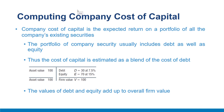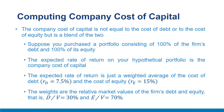The 7.5% cost of debt is the opportunity cost of capital for investors who hold the firm's debt; the 15% cost of equity is the opportunity cost for investors who hold the firm's shares. Neither alone measures the company cost of capital. The cost of debt is less than the company cost of capital because debt is safer than the assets. The cost of equity is greater because equity of a levered firm is riskier than the assets — equity is a residual claim that stands behind the debt. The company cost of capital is a blend of the two.